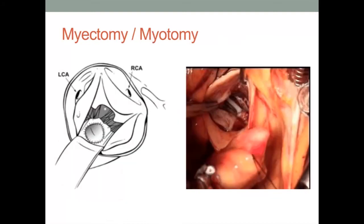In instances where preoperative evaluation has revealed subaortic narrowing or obstruction, a concomitant myotomy or myectomy in addition to aortic valve replacement may be an option for an anatomically and physiologically adequate left ventricular outflow tract. Exposure is obtained as previously described by either an aortotomy or by complete transection of the ascending aorta. The coronary artery ostia are then well defined to avoid any iatrogenic injury. In addition, the valve leaflets, commissures, and area of the presumed conduction system are also well identified and protected during the process of myectomy or myotomy.